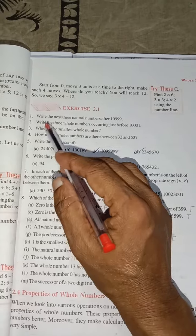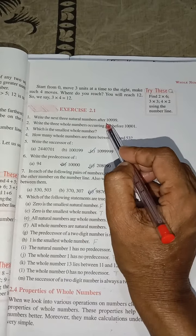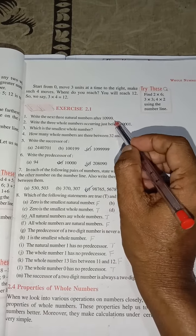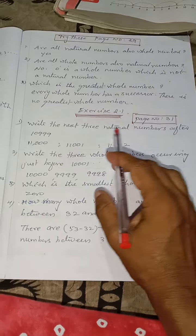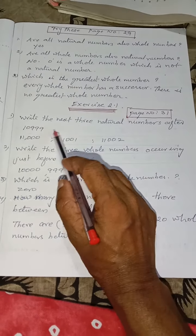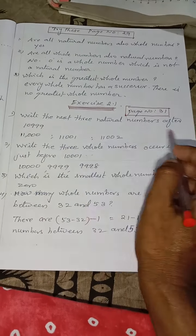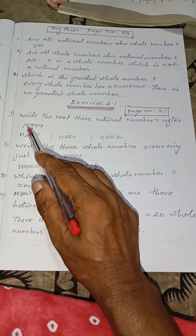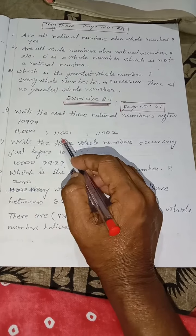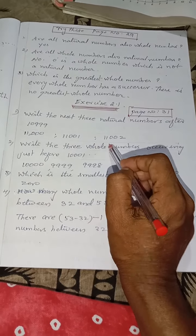Let us see exercise 2.1. Write the next 3 natural numbers after 10,999. Next 3 natural numbers. So exercise 2.1, first problem. Write the next 3 natural numbers after 10,999. The next 3 natural numbers are 11,000, 11,001 and 11,002.